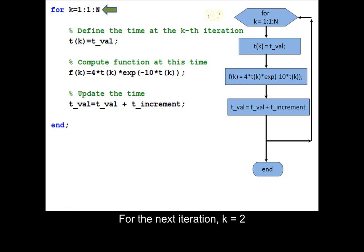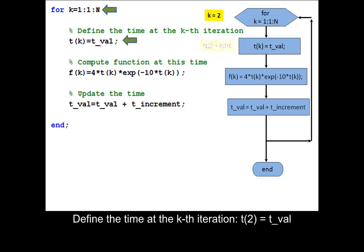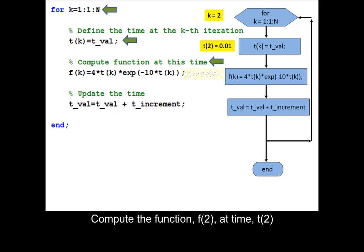For the next iteration, k equals 2. Define the time at the k-th iteration: t of 2 equals dval. Compute the function f of 2.